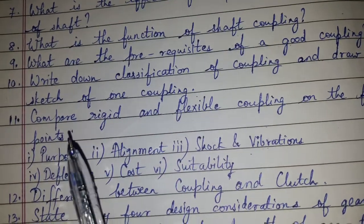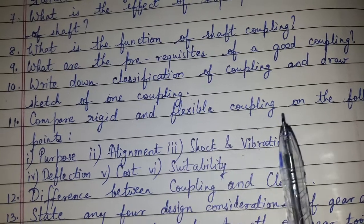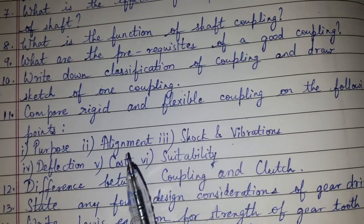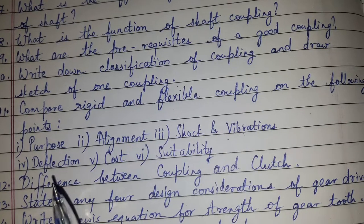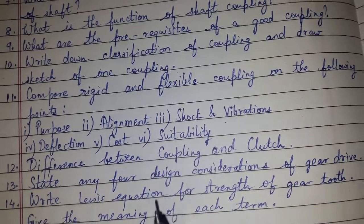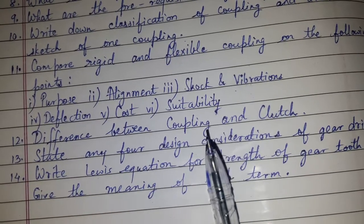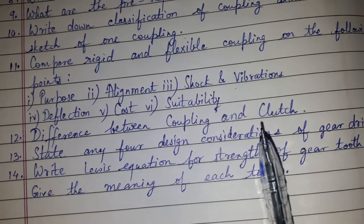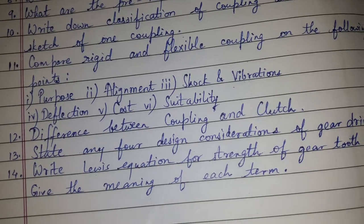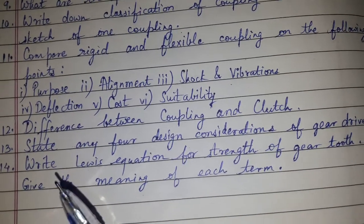Question number eleven: Compare rigid and flexible coupling on the following points — purpose, alignment, shock and vibration, deflection, cost, and suitability. Question number twelve: Difference between coupling and clutch. Question number thirteen: State any four design considerations of gear drive.